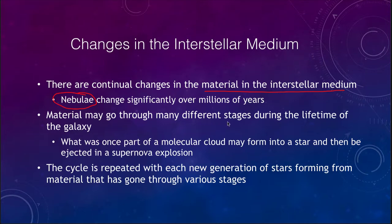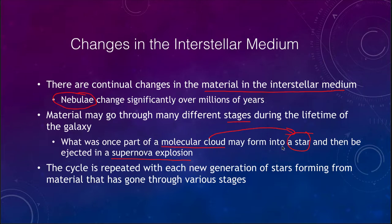This material will go through different stages during the lifetime of the galaxy. What was once part of a molecular cloud may then form into a star and eventually be ejected in a supernova explosion. The same material that was in the cloud became the star, lived its life as a star, and if it was a very massive star may have ended its life as a supernova sending that material back out into space. But the material that goes in is not the same as the material that comes out — it has been changed.